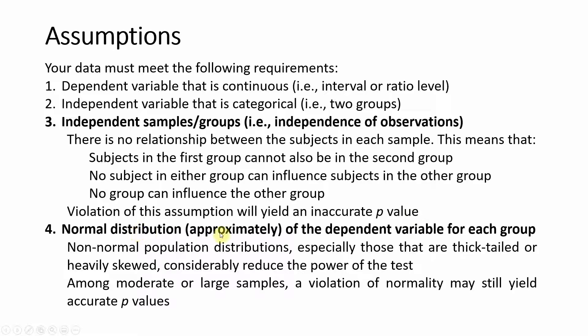Your data should be approximately normally distributed. Non-normal population distributions, especially those that are thick-tailed or heavily skewed, will considerably reduce the power of the test. However, with a moderate or large sample size, a violation of normality may still yield accurate p-values — so even if your data is not normally distributed, a large sample size will still produce reasonably accurate p-values.